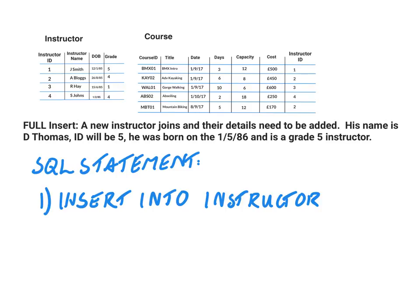The next part is going to be to specify what the values are. We're going to be putting in a value for every field: instructor ID which is 5, instructor name which is D. Thomas, the date of birth is the 1st of May 1986, and he is a grade 5 instructor. We'll just match up the columns — his ID 5 goes in that field, his name D. Thomas goes in there, his date of birth goes in there, and he's a grade 5 instructor so that goes in there.